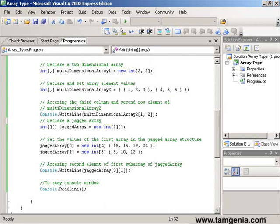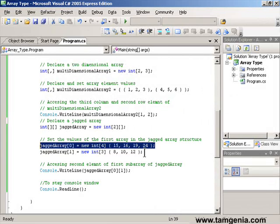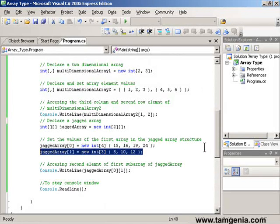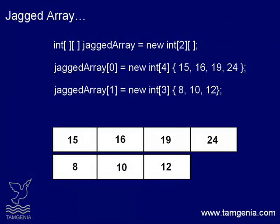Last one is a jagged array. It is essentially an array of arrays. We need to use the new operator to instantiate the size of the primary array, and then use the new operator again for each sub-array. In case of jagged arrays, the sizes of sub-arrays can be different.